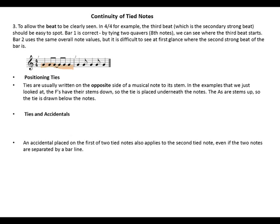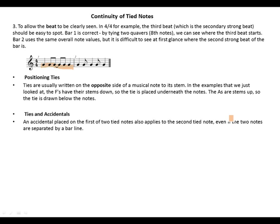Ties and accidentals: an accidental placed on the first of two tied notes also applies to the second tied note, even if the two notes are separated by a bar line. Like this example: this G sharp, when these are tied, this also becomes sharp. The first note in bar 2 is also a G sharp.